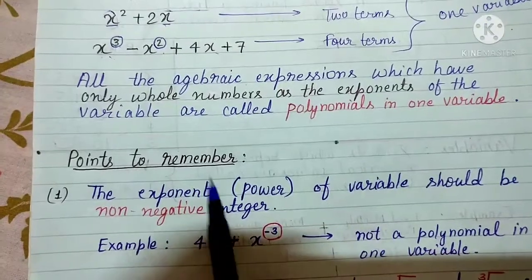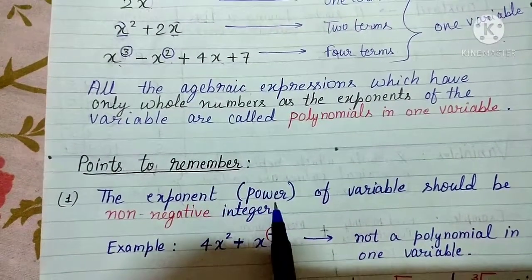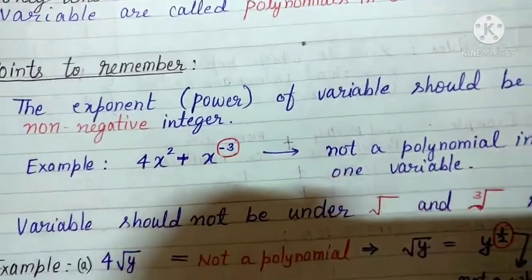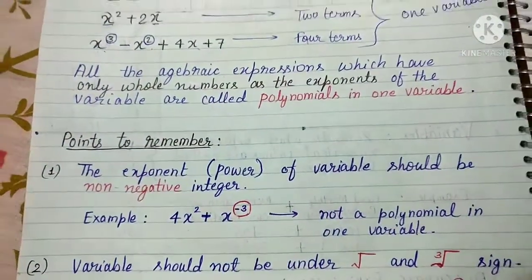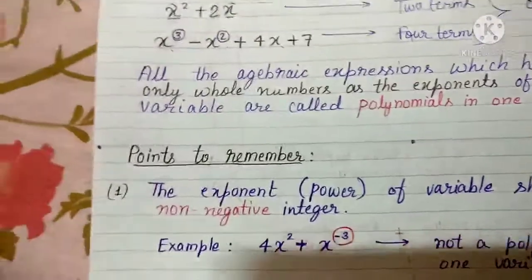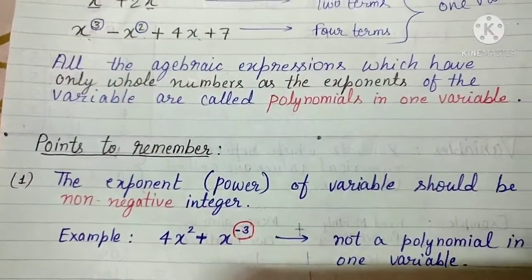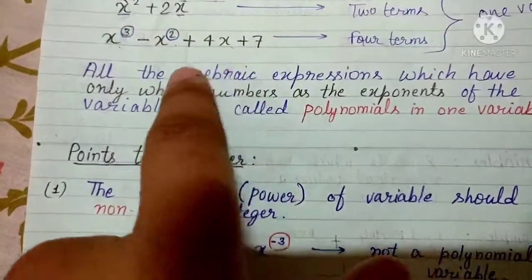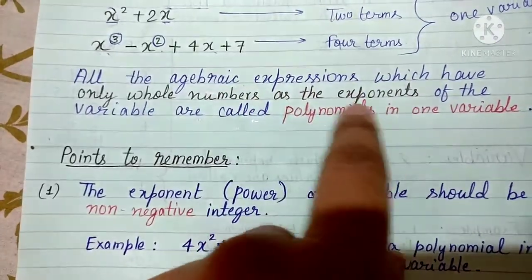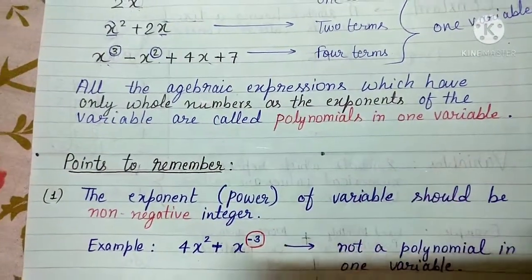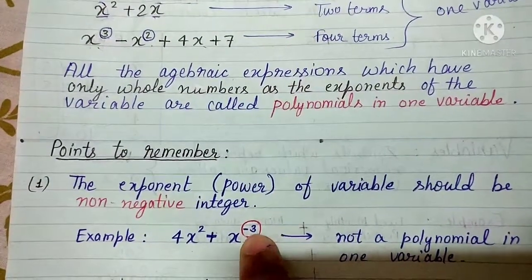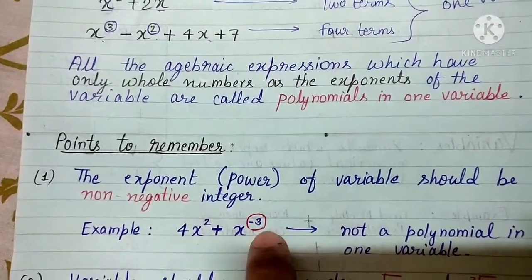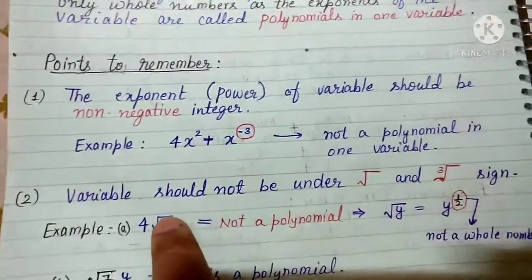Points to remember: First, the exponent or power of the variable should be a non-negative integer, or you can say a whole number. For example, 4x square plus x raised to the power minus 3 is NOT a polynomial in one variable, because the exponent minus 3 is negative. The exponent of the variable should be non-negative — positive only — so this is not a polynomial.